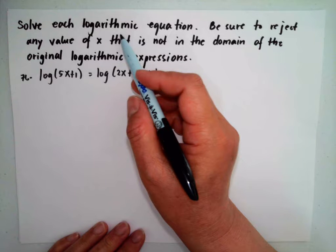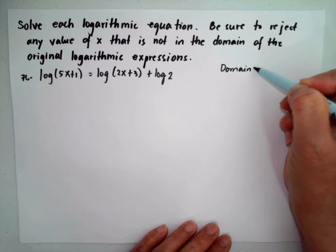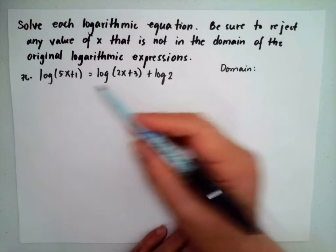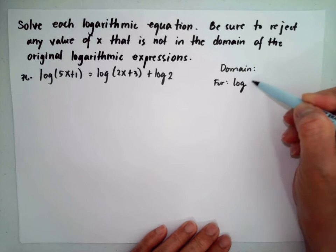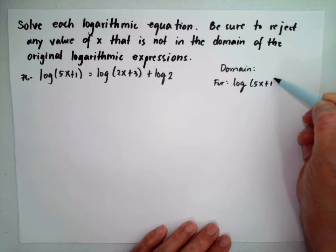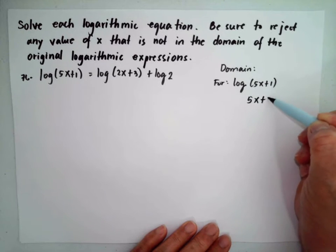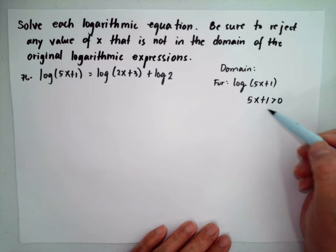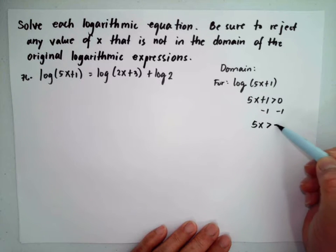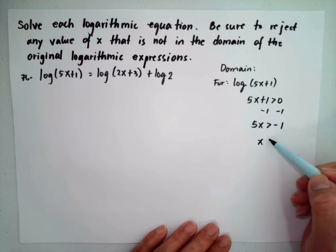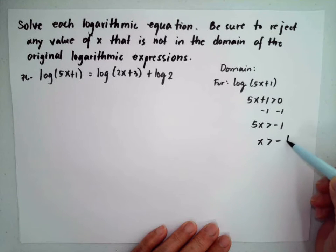First we will solve the domain of each term. For log(5x+1), we need 5x+1 should be greater than 0. Subtract 1 from both sides, so we have 5x should be greater than negative 1 and x should be greater than negative 1 over 5.